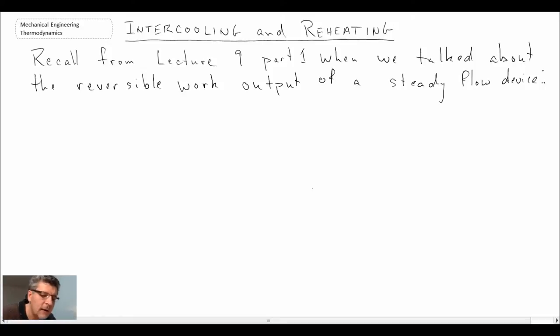So if you recall back in lecture 9 part 1, we talked about reversible work output for a steady flow device and we came up with the following equation for reversible work output.